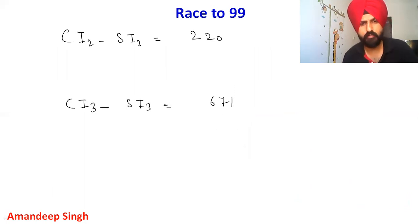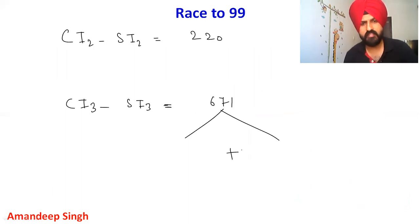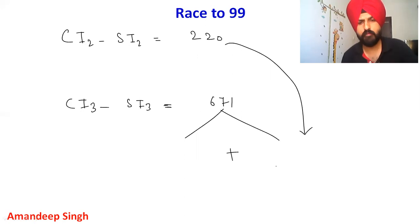The three-year difference has two parts. One part is 3 times the two-year difference, which is 3 × 220 = 660.